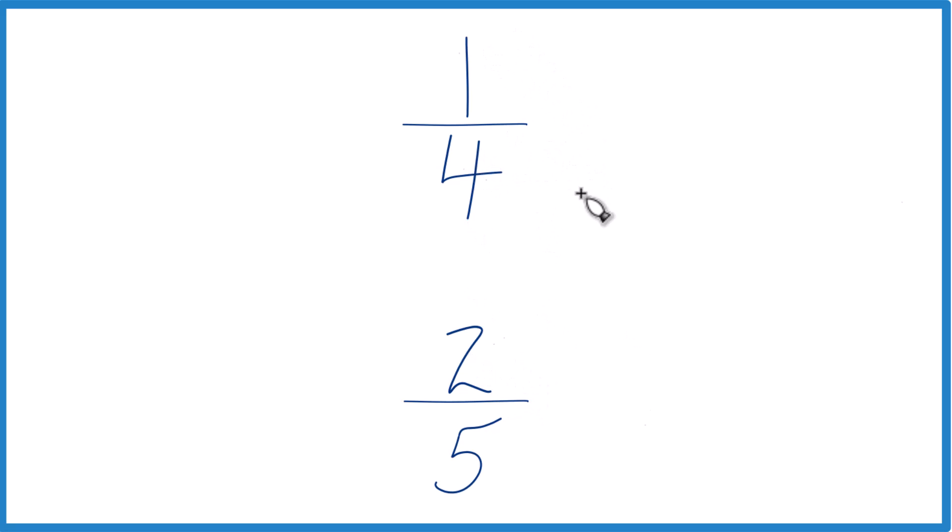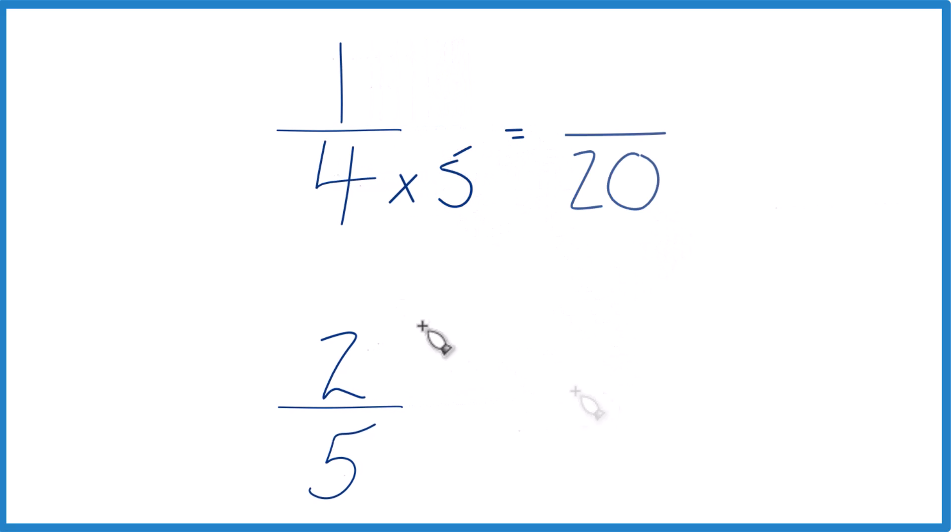The other way to do it is to find a common denominator. Right now we have 4 and 5, but if we could get a common denominator, then we could just compare the numerators. So I'm going to multiply 4 times 5, and that'll give me 20. Then down here I'll multiply 5 times 4, and that'll give me 20.